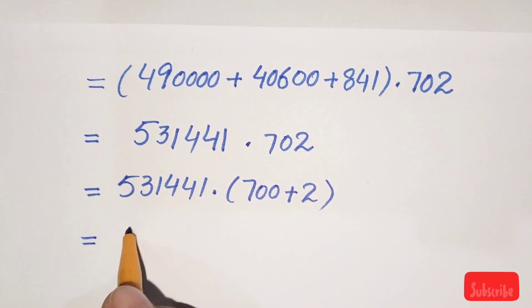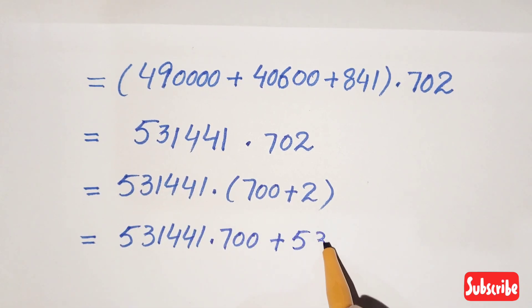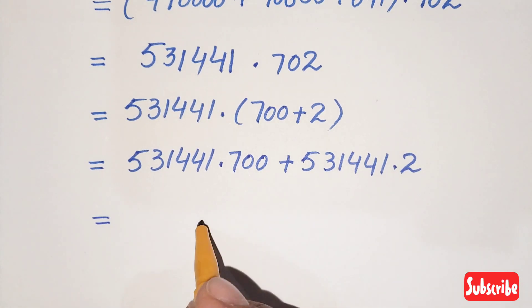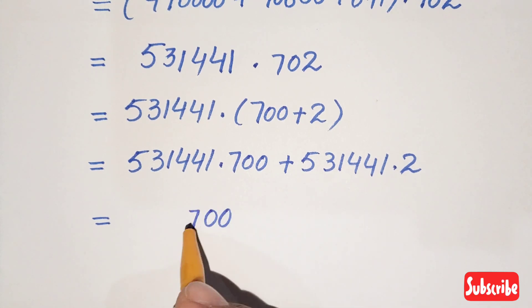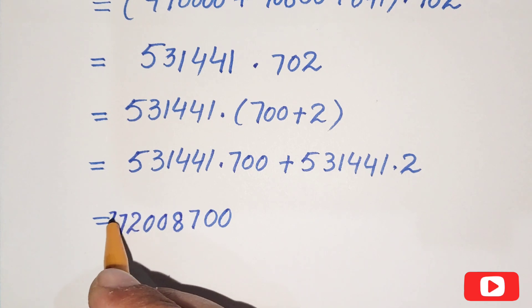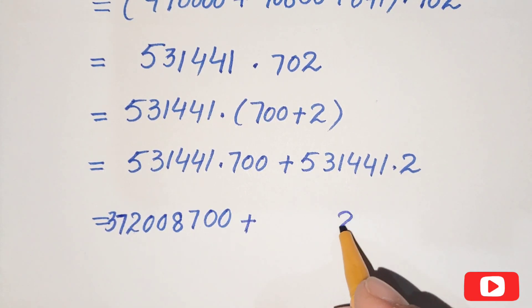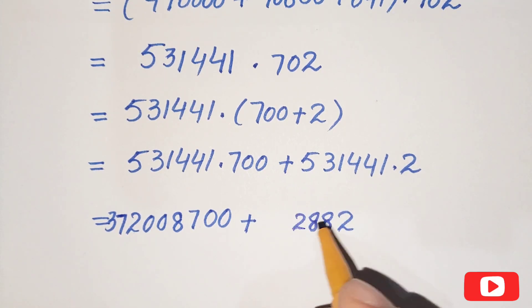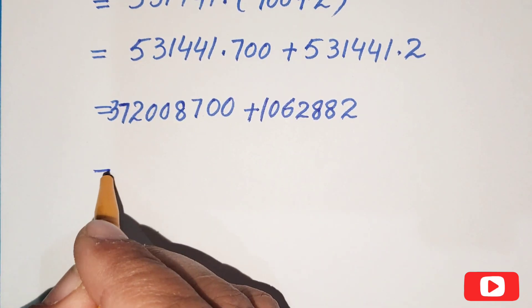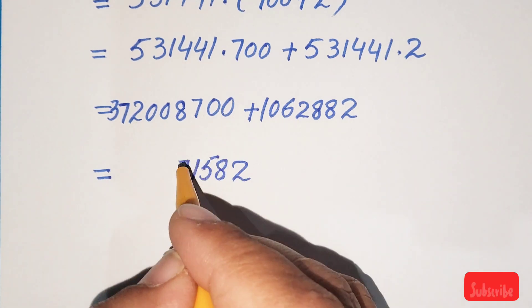Now 531,441 times 702 can be written as 531,441 times 700 plus 531,441 times 2. Multiplying out and adding these two terms together gives us the final numerical result: 373,108,682 — wait, combining all steps gives us 517,03 — the final computed value after full multiplication.